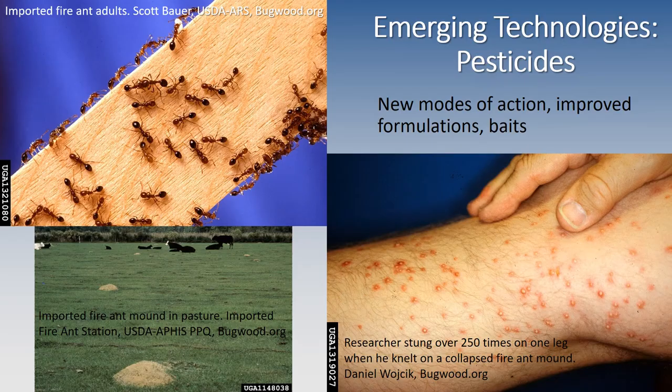We also looked at pesticides, and while we have a wonderful selection in our toolbox, we believe we need to explore new modes of action, improved formulations, and alternative delivery systems such as baits. While some may argue that imported fire ants are not an agricultural pest, they populate both urban and rural areas, and because of their swarming nature and painful stings, it's important to manage them in agricultural production systems. This is an excellent example of understanding the biology of the insect pest and circumventing its ability to overcome our technologies by using baits so the insects themselves help distribute the pesticide within the nest.